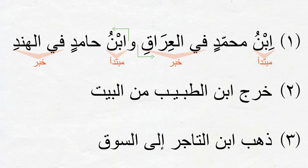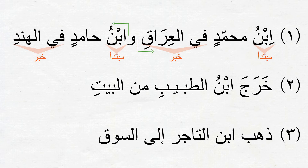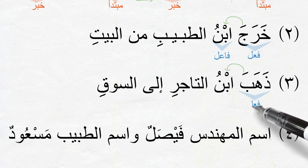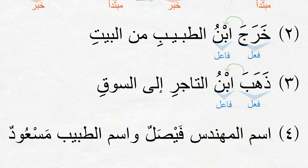Next sentence: خَرَجَ بْنُ الطَّبِيبِ مِنَ الْبَيْتِ — The son of the doctor came out of the house. We join خَرَجَ to إِبْنُ and read them together as خَرَجَ بْنُ. This is a فِعْلِيَّة sentence. The فِعْل is خَرَجَ, the فَاعِل is إِبْنُ which is مُضَاف, الطَّبِيبِ is مُضَاف إِلَيْهِ, and مِنَ الْبَيْتِ is جَار وَمَجْرُور. Third sentence: ذَهَبَ بْنُ التَّاجِرِ إِلَى السُّوقِ — The son of the trader went to the market. ذَهَبَ is the فِعْل, إِبْنُ is the فَاعِل and مُضَاف, التَّاجِرِ is مُضَاف إِلَيْهِ, and إِلَى السُّوقِ is جَار وَمَجْرُور.